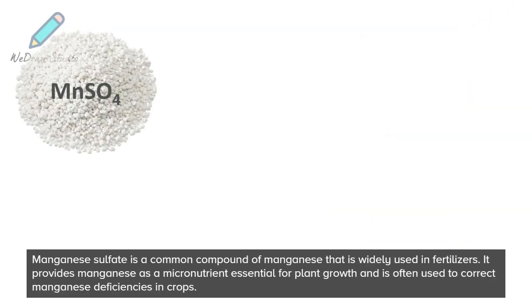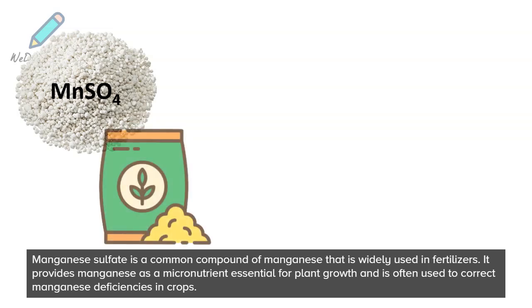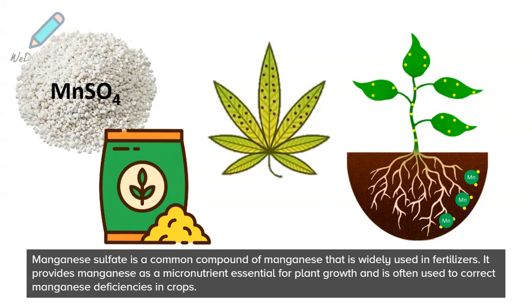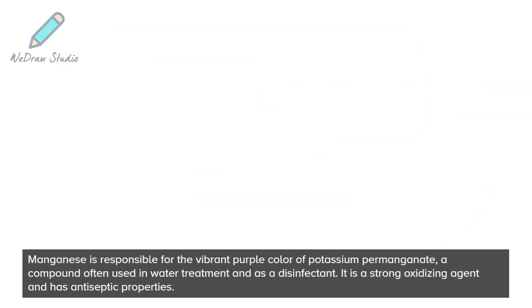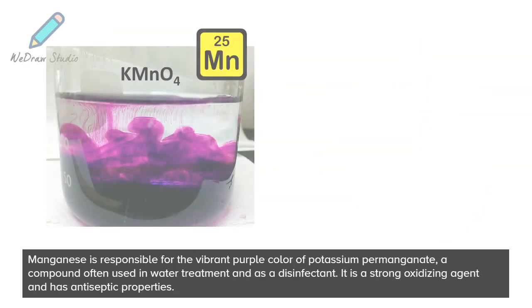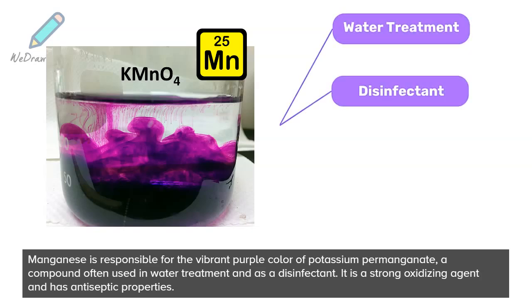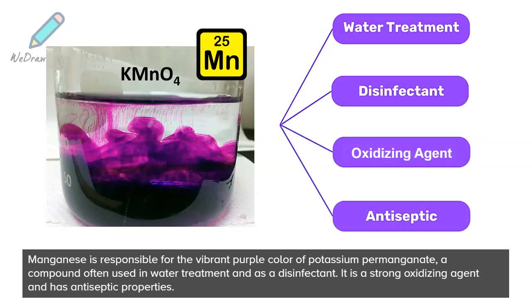Manganese sulfate is a common compound of manganese that is widely used in fertilizers. It provides manganese as a micronutrient essential for plant growth and is often used to correct manganese deficiencies in crops. Manganese is also responsible for the vibrant purple color of potassium permanganate, a compound often used in water treatment and as a disinfectant. It is a strong oxidizing agent and has antiseptic properties.